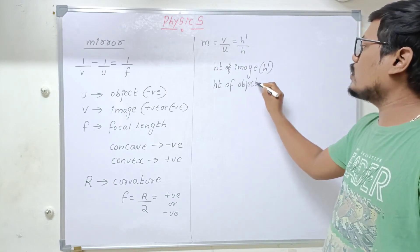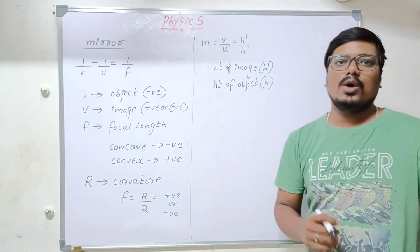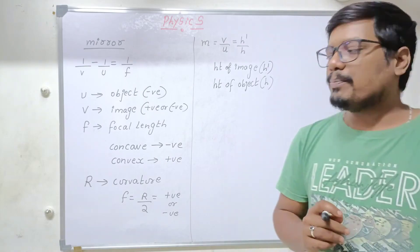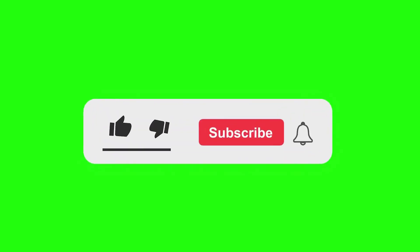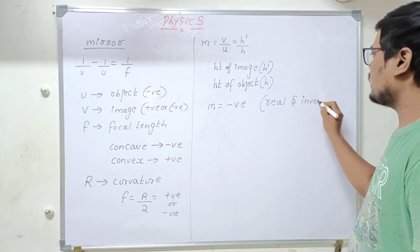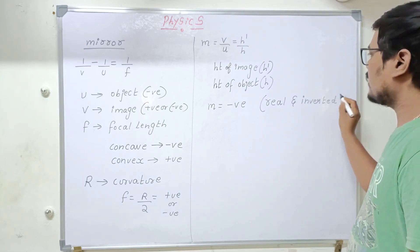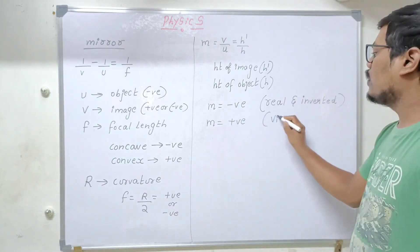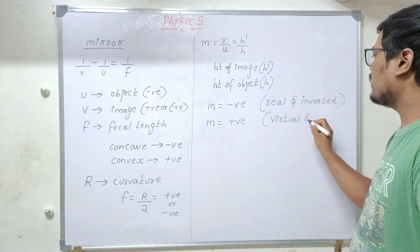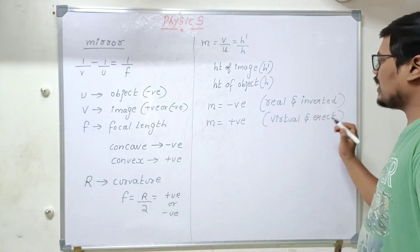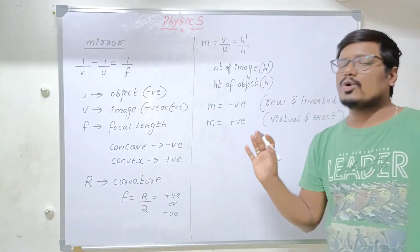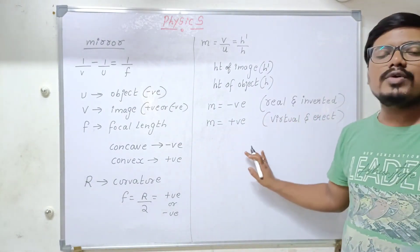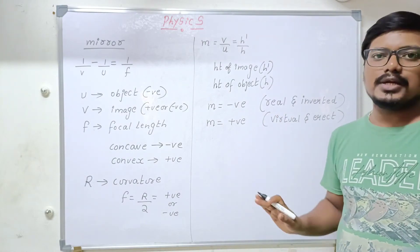Now here also they will ask to write the nature. Very simple. If you get magnification as negative, you should write the image is real and inverted. If magnification is positive, you're gonna write the answer as virtual and erect. These are all the terminologies you should know before solving one numerical. Now I'm gonna solve a numerical. You will get an exact concept related to this. Shall we start?